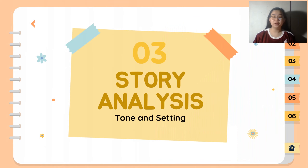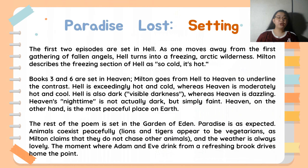Let us now move on to the story analysis, particularly the tone and setting. For the setting, the first two episodes are set in hell. As one moves away from the first gathering of fallen angels, hell turns into a freezing arctic wilderness. Books 3 and 6 are set in heaven. Milton goes from hell to heaven to underline the contrast: hell is exceedingly hot and cold, whereas heaven is moderately temperate. Hell is also dark, whereas heaven is dazzling — heaven's nighttime is not actually dark, but simply faint.